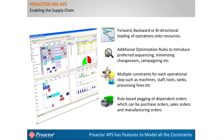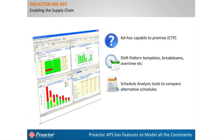Preactor has material control features to deal with dependent orders. Preactor will tell you when you can deliver orders based on all the constraints of the system. You can add shift pattern details and change them — for example, adding overtime working — to see if this overcomes resource capacity problems. You can also save alternative schedules and compare them using tools embedded in Preactor.